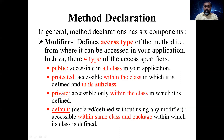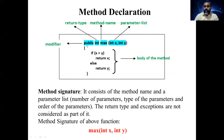The default access specifier means you declare without using any of the three keywords — public, protected, or private — so it is defaultly called the default access specifier. Accessibility is within the same class and package in which the class is defined, meaning other classes belonging to the same package can access those members. For example, in this method 'max' the modifier is public, so all classes of the application can access it.